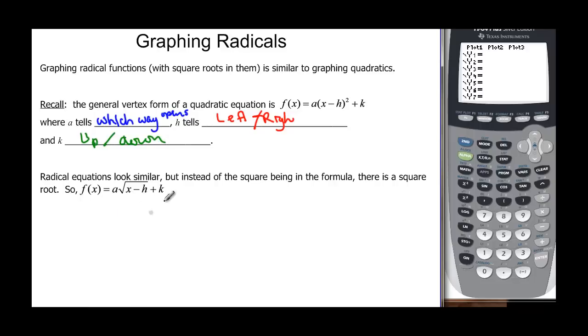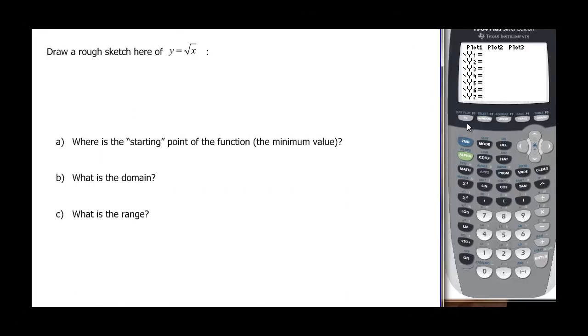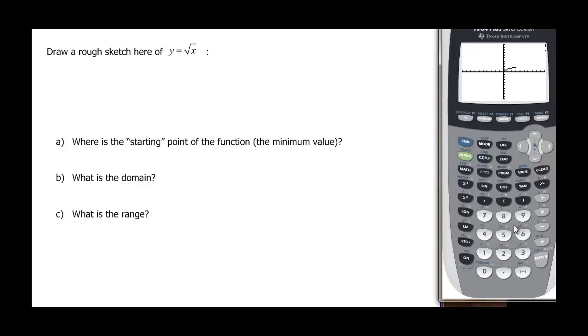We have the same thing with radical equations. It's just a times the square root of x minus h plus k instead of the quantity squared. So we want to know what y = √x looks like. I'm in my calculator and will let it graph. Standard window should be good.